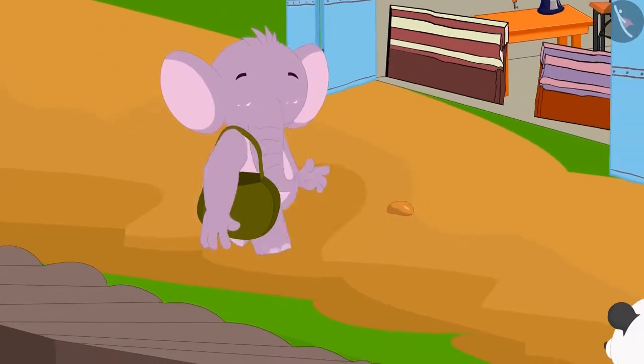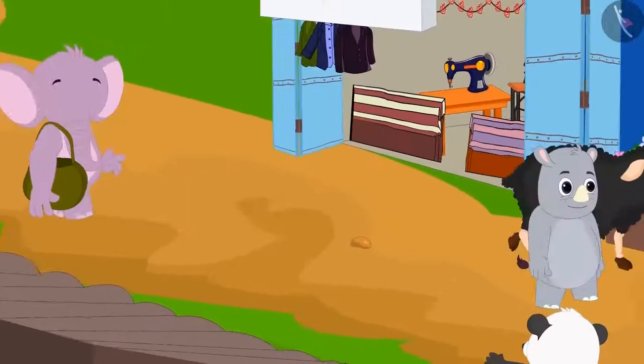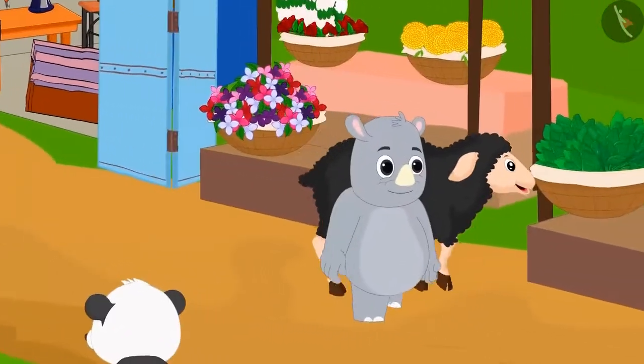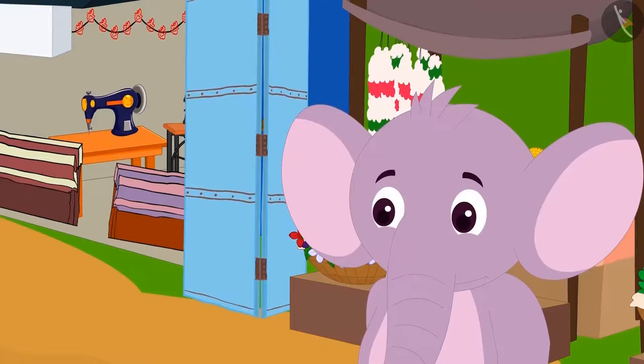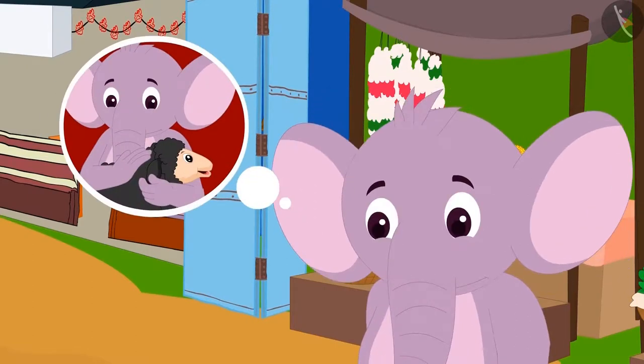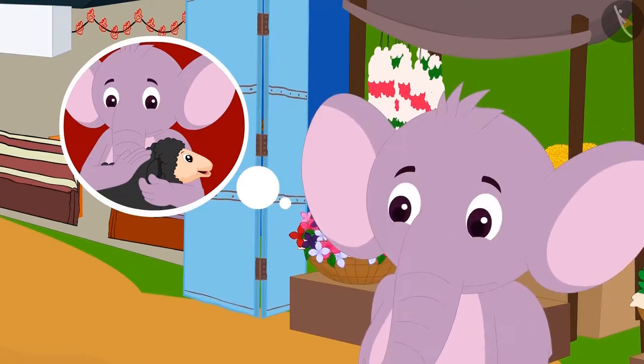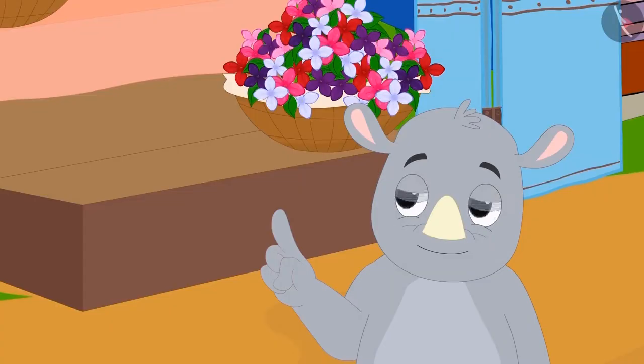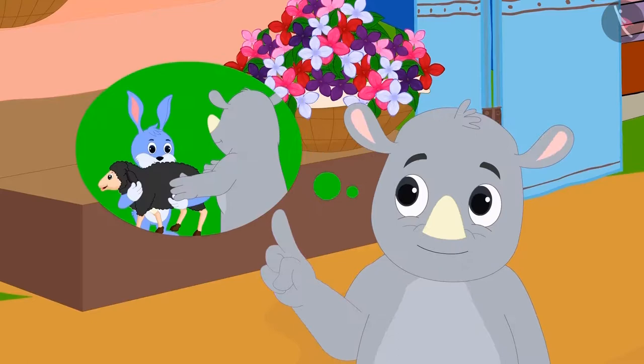That week, Appu went to the market. There he saw one of his sheep with Gagu. Only Appu had one and only black sheep in the entire village, so he quickly recognized it. Upon asking Gagu, Appu got to know that he had bought the sheep from Bunny.